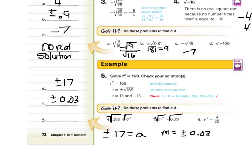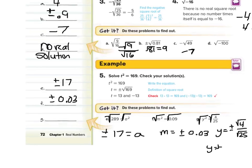What about y squared equals 4 twenty-fifths? Again, take the square root of both sides. Y is going to equal plus or minus the square root of 4 over the square root of 25. The square root of 4 is 2, and the square root of 25 is 5. So y equals plus or minus 2 fifths.